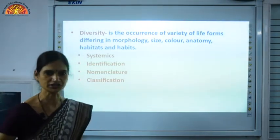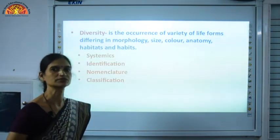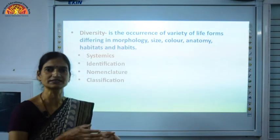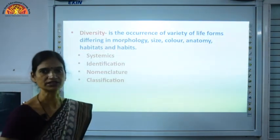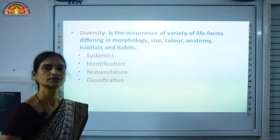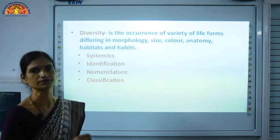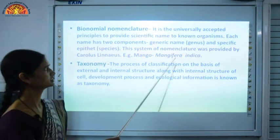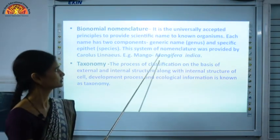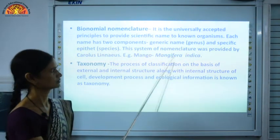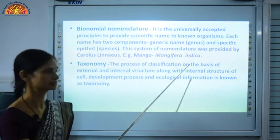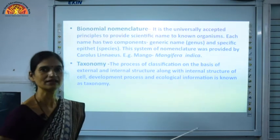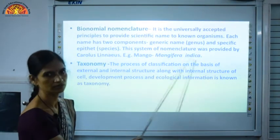Last comes classification. Classification shows how to arrange any organism in a hierarchy. As I explained binomial nomenclature — 'Mangifera indica', the name consists of two parts, Mangifera and indica. Here M is capital and I is small, and it is written in italics form. If we write by hand, we underline them separately — Mangifera underlined separately and indica underlined separately.